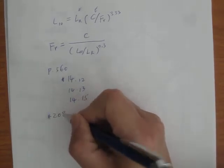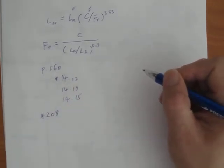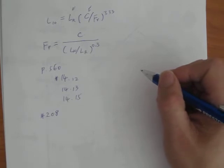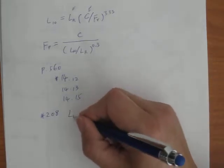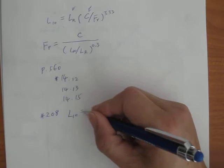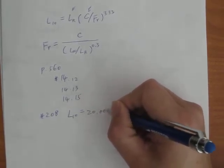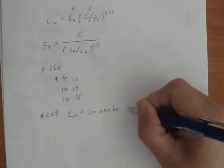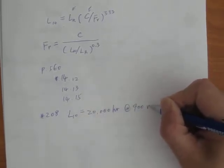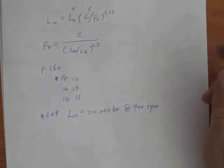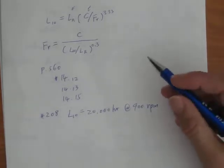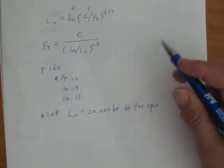Ball bearing, and if we want to have an L10 life to be equal to 20,000 hours at 900 rpm. Let's say if we have a machine that runs like that.